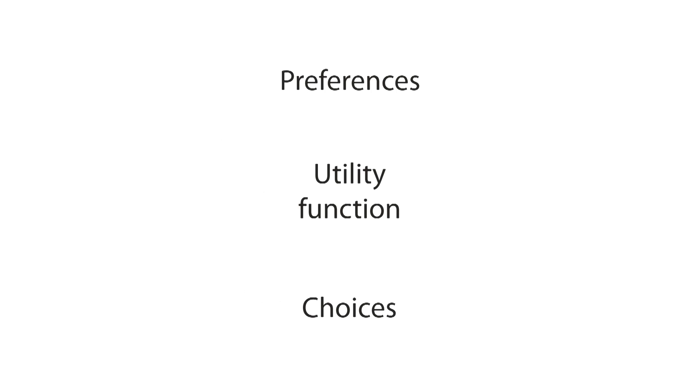What revealed preference theory does is work backwards to assume that we can deduce these utility functions from consumer behavior. Analyzing these choices leads us backwards to a set of preferences that influence the choices they make. It therefore allows economists to study consumer behavior empirically.